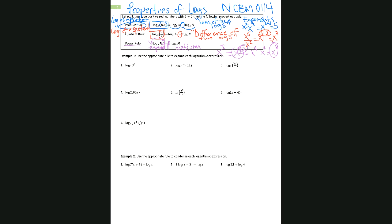It is important to know those rules because we need them to solve exponential and logarithmic equations. We can go from left to right and right to left. If the question says 'expand,' that means to go from left to right. But they could also say 'condense,' which implies going from right to left — for example, from the difference of two logs into the log of a quotient. Condensing is also referred to as 'write as a single logarithm,' so make sure you only have the abbreviation log written once.